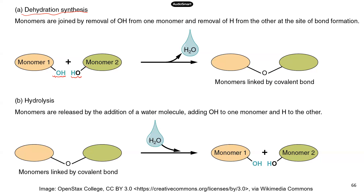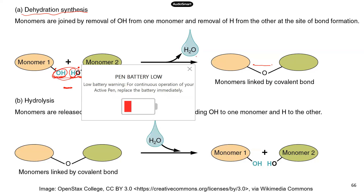In chemistry terms, when you have a hydroxyl group at the end of each monomer, there are no free electrons to form a covalent bond — remember, you need two electrons to form one covalent bond. So we remove the hydroxyl group from one monomer and one hydrogen ion from the other. This frees electrons on each monomer so they can form a covalent bond. That's why we remove a water molecule: OH from one monomer and H from the other.